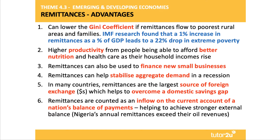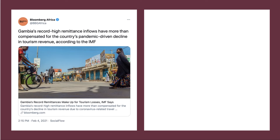Many of these countries have quite a large savings gap with low levels of corporate, government, and individual savings, so remittances can help cover that gap. Also important is the balance of payments — inflows are counted as a positive on the current account, helping to achieve strong external balance and providing a good source of dollars and other currencies. Nigeria's annual remittances of $20 billion plus actually exceed their oil revenues. For example, Gambia's record high remittance inflows have more than compensated for the loss in tourism during the pandemic, and Nigeria's remittances are around 10 times their FDI flows.